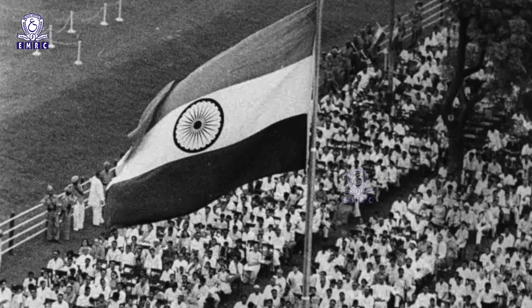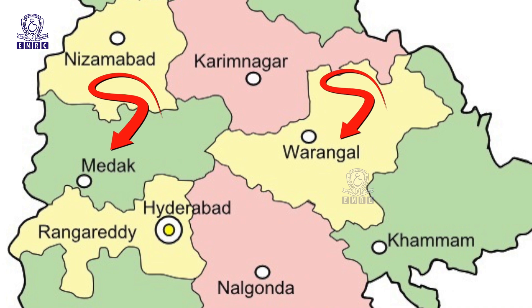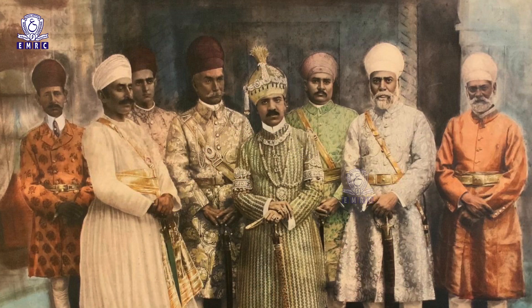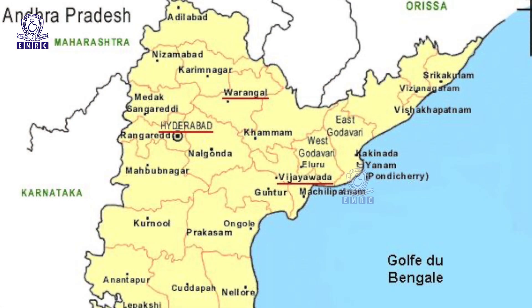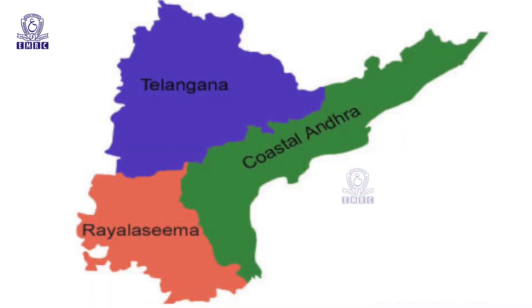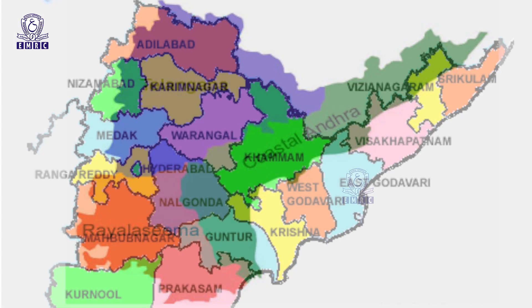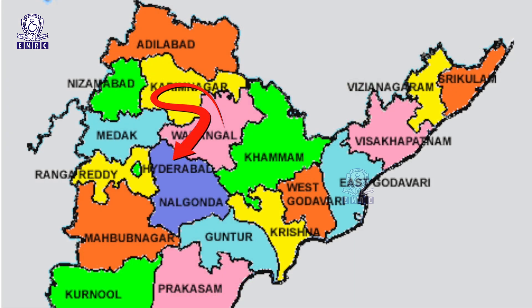Telangana was a part of Hyderabad state from September 17, 1948 to November 1, 1956. It was merged with Andhra state to form the Andhra Pradesh state. Before India became independent, it was included in the Hyderabad state which comprises two divisions namely Warangal and Medak. At the time, Telangana was governed by Nizams. Up to 2014, Andhra Pradesh was divided into three prominent regions namely Telangana, Coastal Andhra and Rayalaseema, with Hyderabad city as the capital.